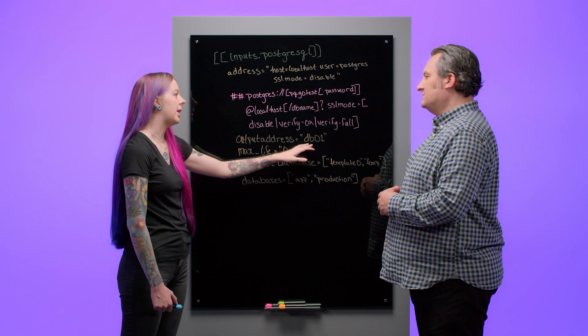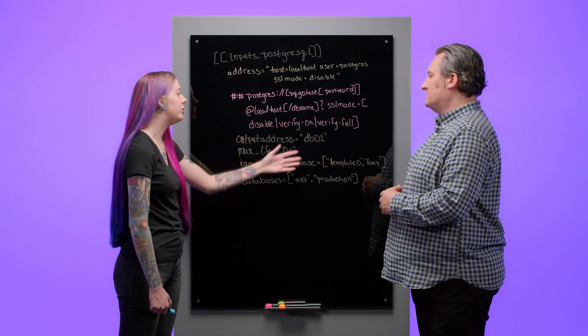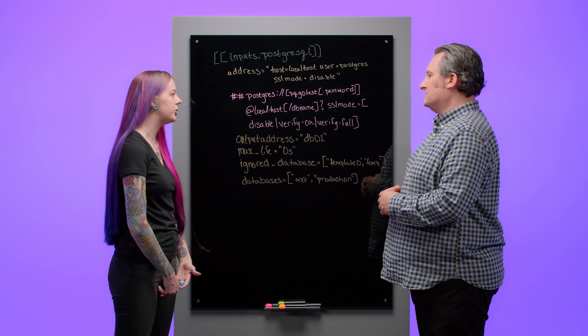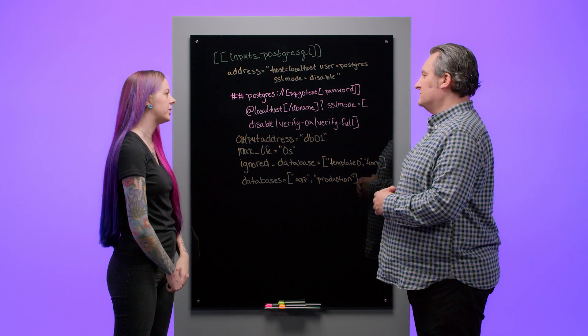And what's the output address option? Your output address is going to be the name of your database in Telegraph. If you don't set it, Telegraph will automatically choose one based on the address you set.